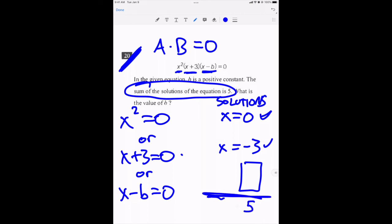Well, zero plus negative three plus eight is equal to five. And in that case, if my solution is eight, then B must also be eight, because it's eight minus eight, which is equal to zero. Eight has to be my correct answer.